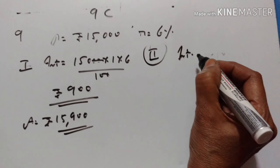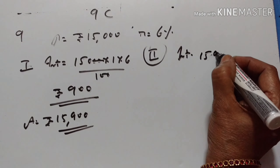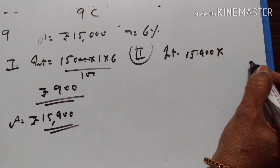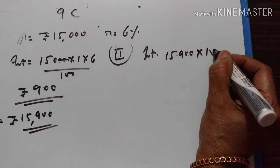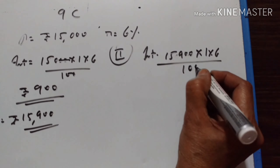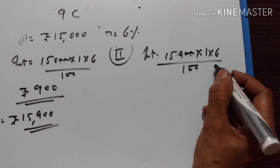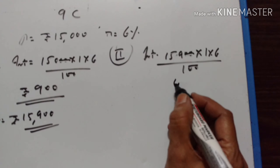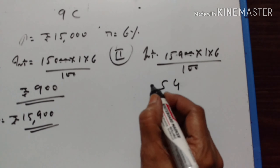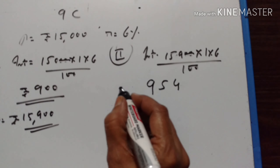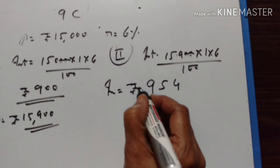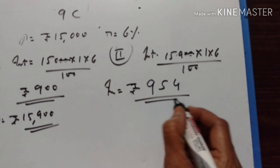So, interest for the second year: interest is equal to Rs. 15,900 into T, R upon 100. That is 159 into 6 — calculating: 6×9 is 54, carry 5; 6×5 is 30, plus 5 is 35, carry 3; 6×1 is 6, plus 3 is 9. Therefore, interest for the second year is equal to Rs. 954.